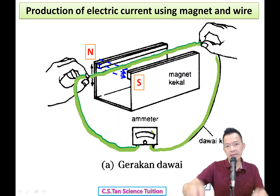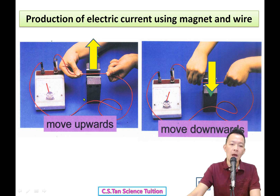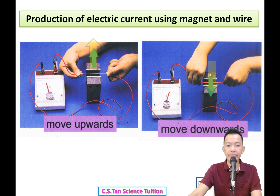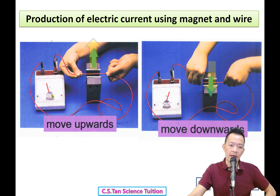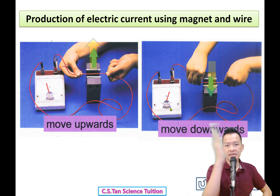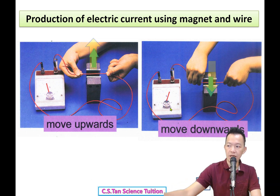So you use your wire to cut through the magnetic field - 切它切它 - and the needle swings back and forth 摇来摇去. Set up: one copper wire connected back to the ammeter, then move the wire up and down cutting the magnetic field. The needle deflects back and forth - meaning electric current is produced 电流已经产生了.